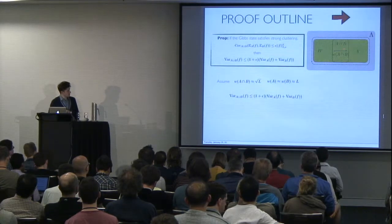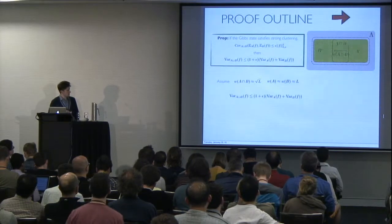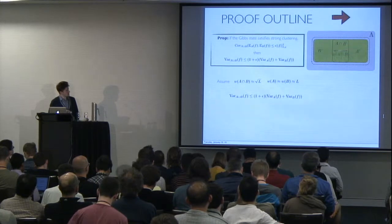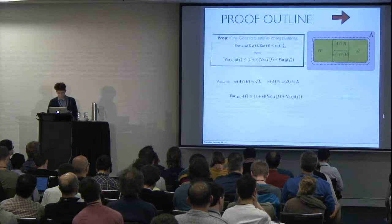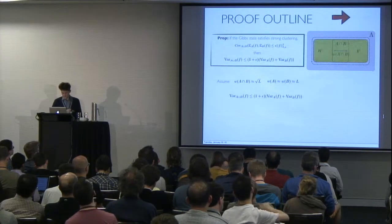for simplicity assume that the distance W is the width of A, WB is the width of B, and we both assume that these are roughly of size L, and we assume the width of the overlap is roughly square root of L.